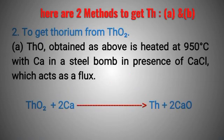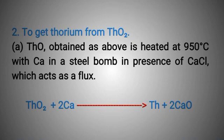Step 2: To get thorium from thorium dioxide. Method A: Thorium dioxide obtained as above is heated at 950 degrees centigrade with calcium in a steel bomb in the presence of calcium chloride, which acts as a flux. The reaction: thorium dioxide plus calcium react and give thorium plus calcium oxide.